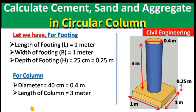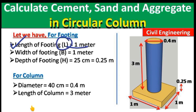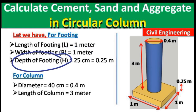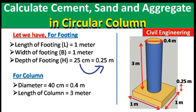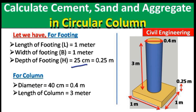I have created a 3D picture of the circular column. Its diameter is 0.4 meters and its height is 3 meters. Its footing is in a cubical shape with a length of 1 meter, width of 1 meter, and depth of 0.25 meters — converting 25 centimeters by dividing by 100, since 1 meter equals 100 centimeters.